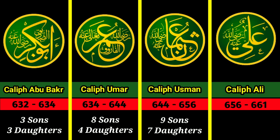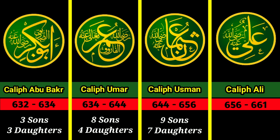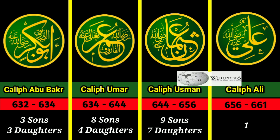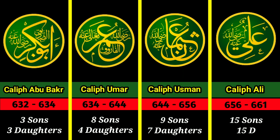Friends, there are many misconceptions about Caliph Ali's children. Some people say he had 33 children and some say he had 27 kids. Many people have different thoughts about his kids, but the report of Wikipedia mentions the names of 30 children — 15 sons and 15 daughters.